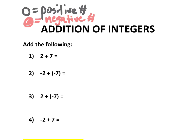If we are going to add 2 plus 7 together, we all know that the answer is 9, but we need to be able to show that with counters and model it. So that means I've got 2 white counters, and I'm going to add 7 more white counters. If you count all of these counters together, I have a total of 9 counters. So the answer to 2 plus 7 is 9.